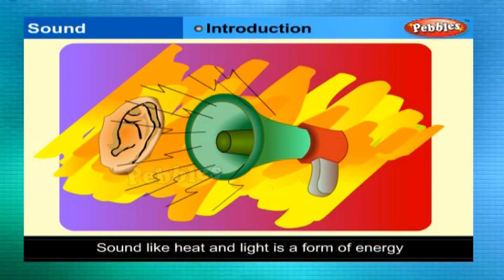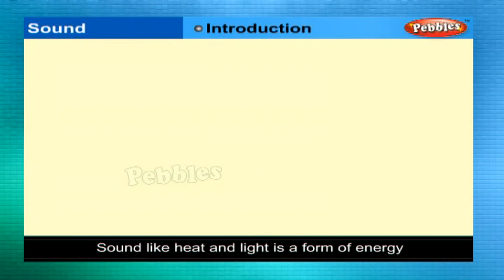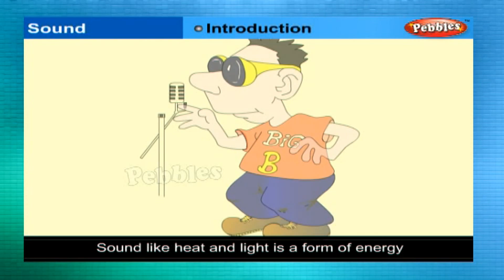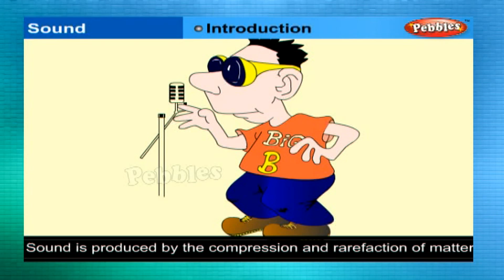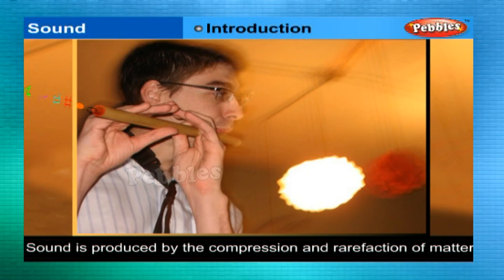Sound, like heat and light, is a form of energy. Sound travels in waves. Waves are vibrations that occur in a material as sound passes through it. When we listen to someone speak, our ears detect sound waves in the air around us, caused by the person's vibrating vocal cords. Sound is produced by the compression and rarefaction of matter.